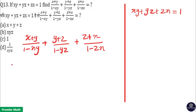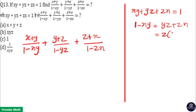You can see that 1 - xy is in the denominator of the first term. From the first equation, the value of 1 - xy is yz + zx, and z is common here. So z(x + y) = 1 - xy. Put the value of 1 - xy in the denominator, that is z(x + y).